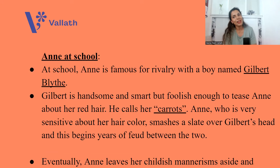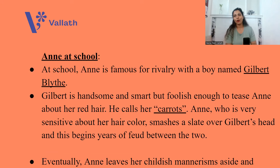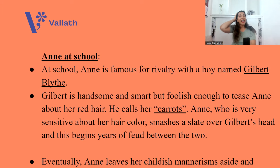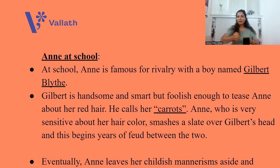Now let's talk about Anne at school — a very important character is entering. At school, Anne is famous for her rivalry with a boy named Gilbert Blythe. Gilbert is handsome and smart, but he is foolish enough to tease Anne about her red hair, actually calling her 'carrots.' Anne, who is very sensitive about her hair color, smashes a slate over Gilbert's head, and this literally begins years of feud and rivalry between the two most intelligent people in the school.